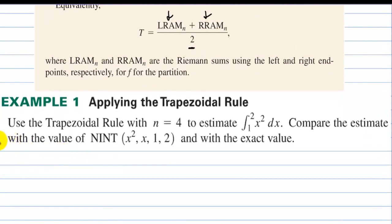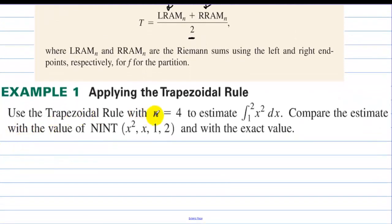Applying the trapezoidal rule. Use the trapezoidal rule with n equal 4 to estimate the area under the curve of x squared. Compare the estimate with the value of NINT and with the exact value. Alright, so we're going to split x squared up from 1 to 2 into 4 subintervals. So we have a parabola. And we have, we're going from 1 to 2. So here's 1 and here's 2.